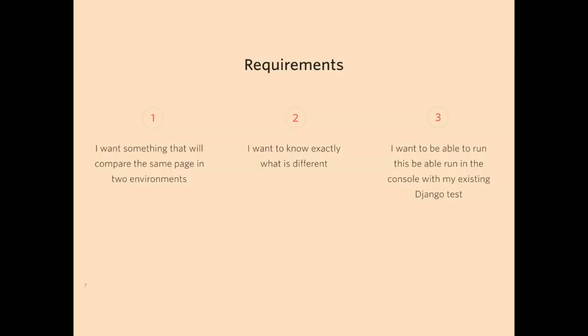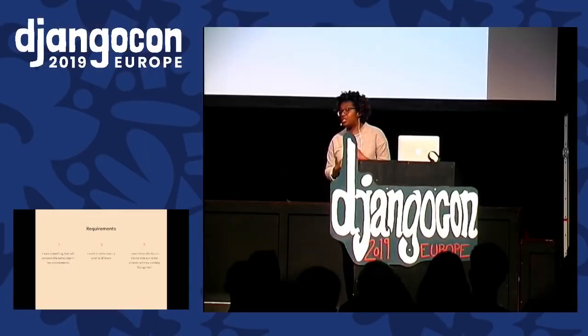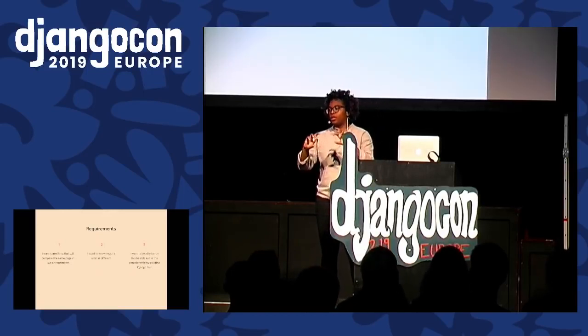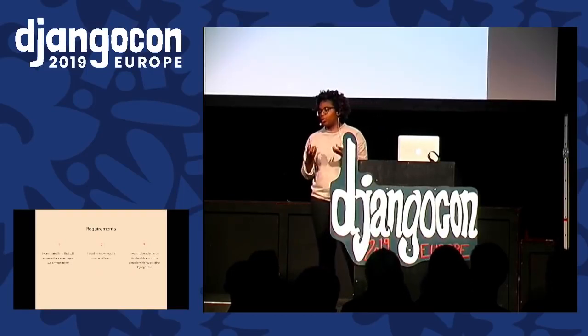The second requirement was to know exactly what's different. I don't need an error message that just says 'your CSS is off' — what does that mean? This colour's wrong? The spacing's wrong? An image that should be there isn't there because you broke everything — there's like a fire? I wanted a visual way to see differences, returning something so clear about what I've done wrong that I can easily fix it.